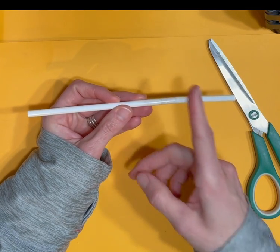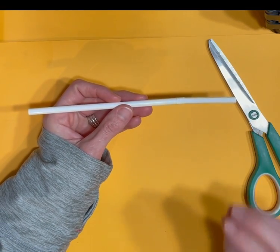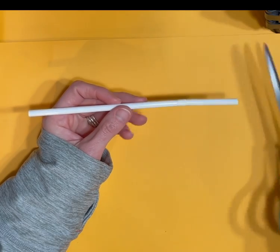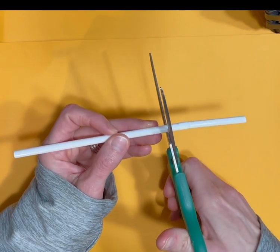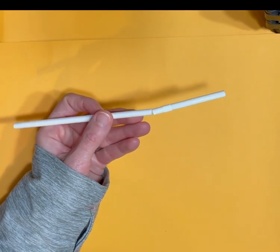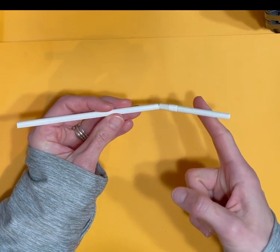You're going to cut it but you don't want to cut it all the way through. You want to cut it almost all the way through but leave a tiny little piece attached so that the straw is still attached a little. So I cut through but not all the way, just enough that it's still attached.